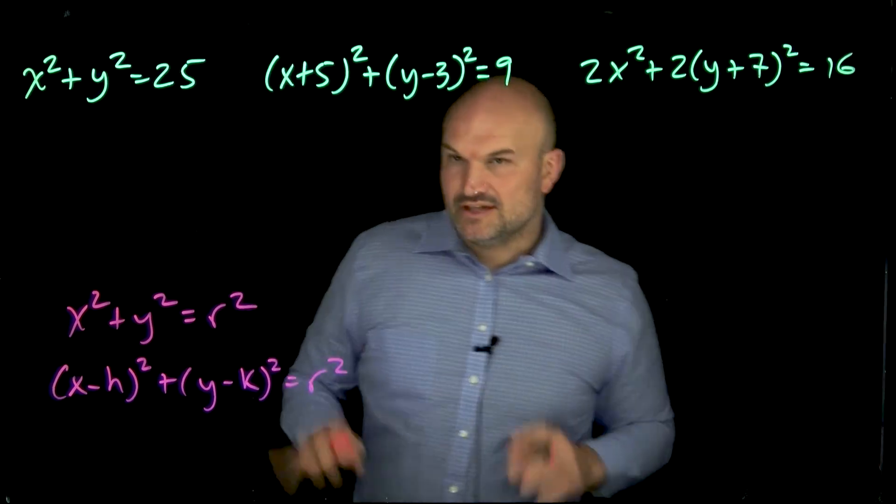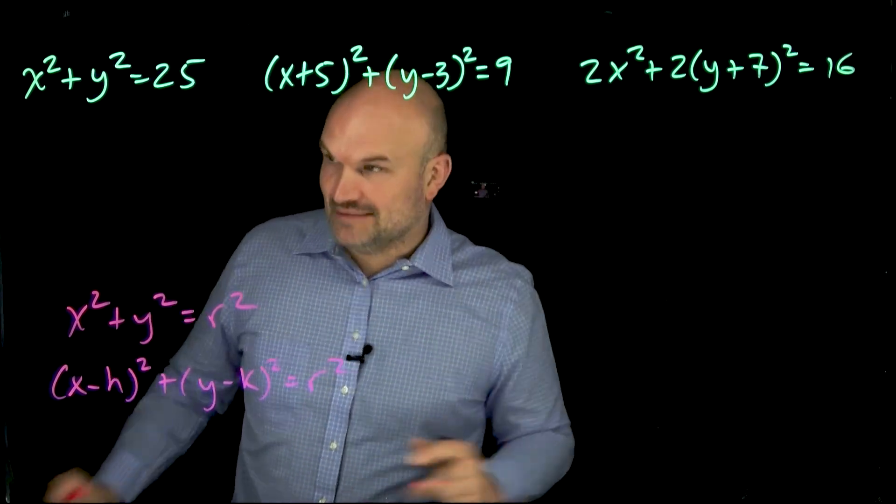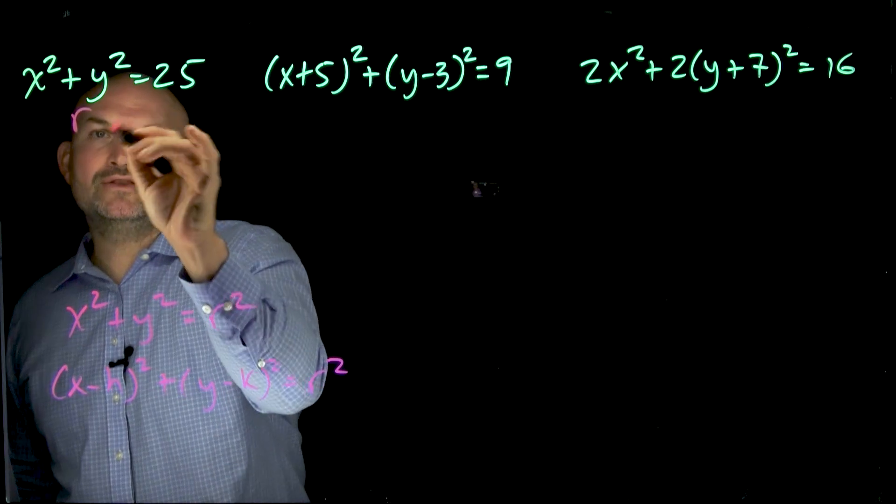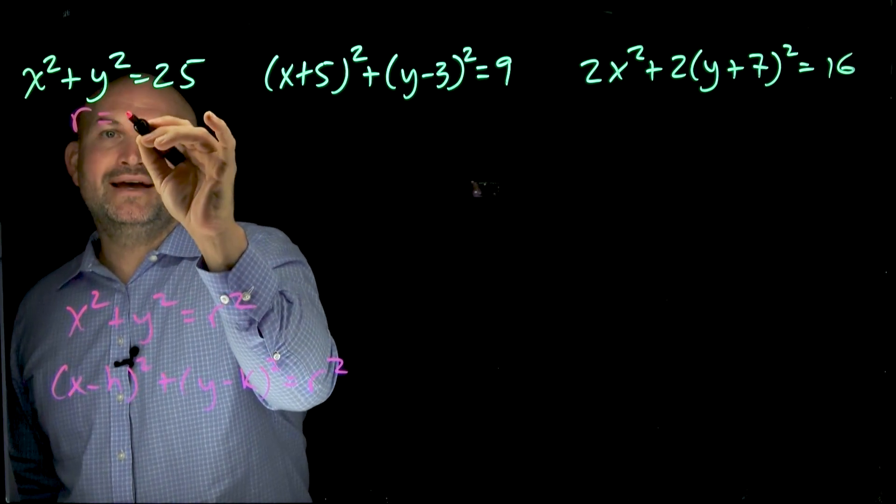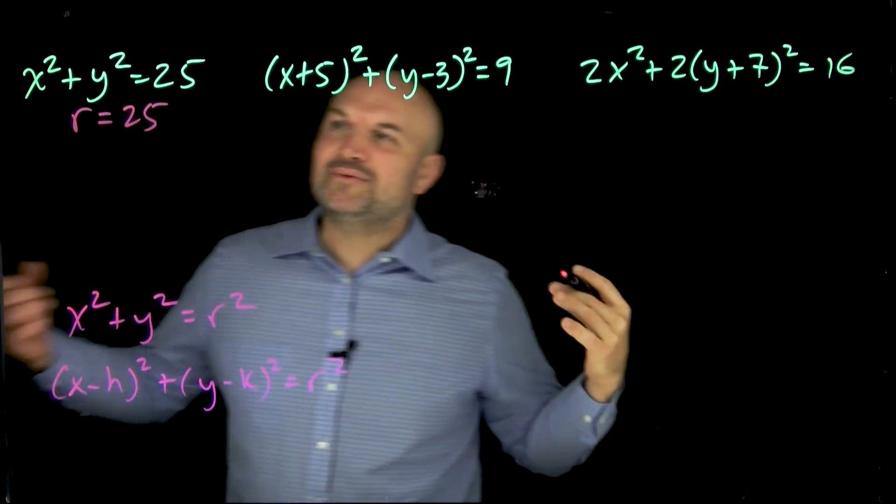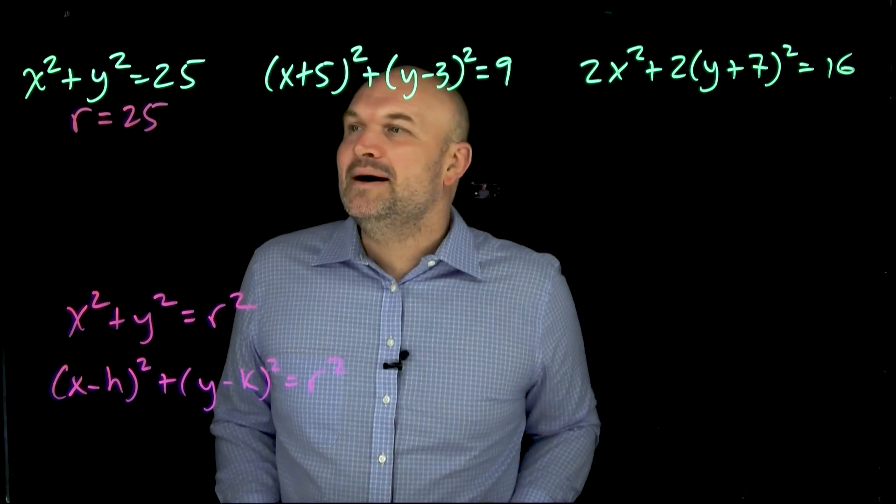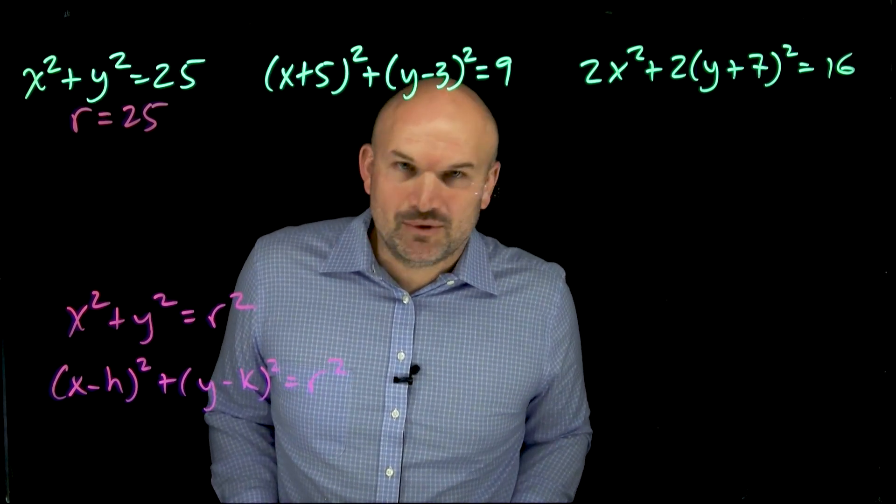Alright, so let's go through the mistakes, the most common ones students make all the time. The first one, students will say, Mr. McLogan, the radius is going to equal to a 25. And no, like we love when we see a square number at the end. But ladies and gentlemen, the radius is not going to be 25.